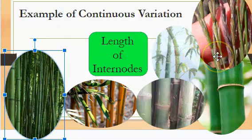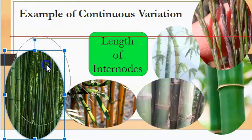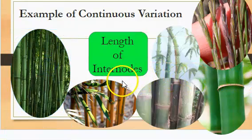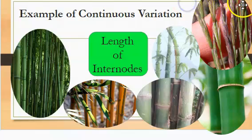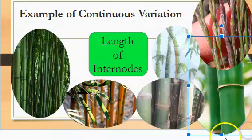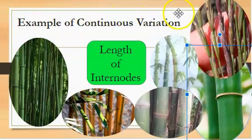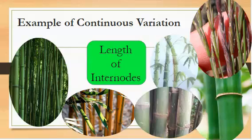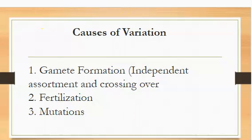That's basically it about variations — very interesting. You may ask yourself: what causes variations? Why do variations exist? There are many causes of variations — as many as three: recombination, which happens during independent assortment and crossing over; fertilization; and mutations.